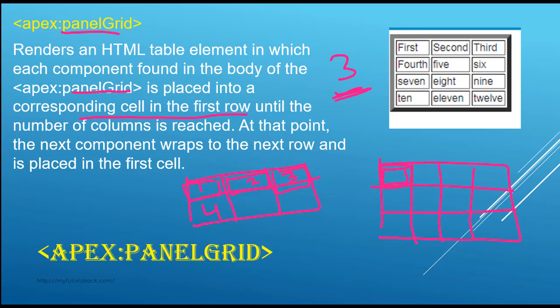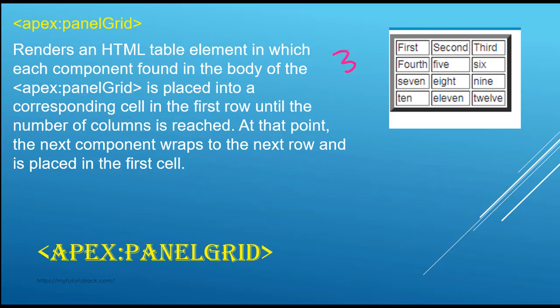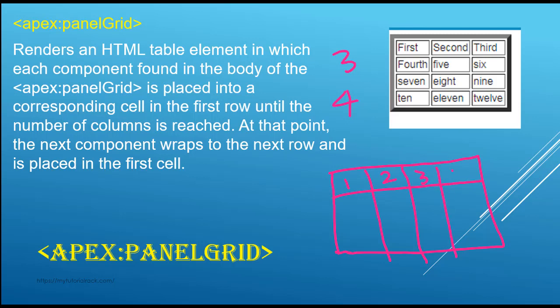Similarly, if instead of specifying the column number as three you have specified it as four, the first element will go at this position, the second at this location, the third here, and there will be a fourth column as well. Then if you're trying to add the next element, it will not go to the next column — it will go to the next row and be placed in the first cell of that row.